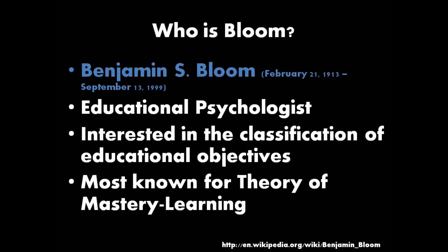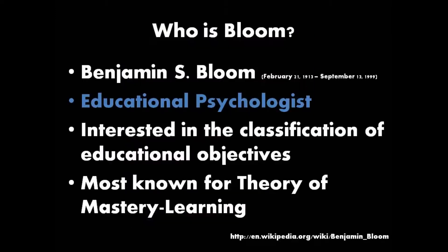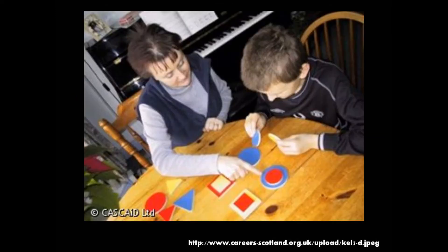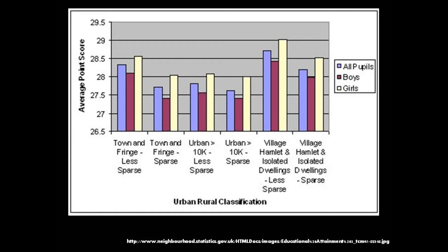Benjamin Bloom, born on February 21, 1913, was a Jewish-American educational psychologist. He was mainly interested in the area of educational objectives, which are what educators expect or intend students to learn as a result of instruction. Bloom also presented the theory of mastery learning.